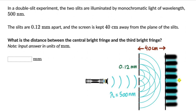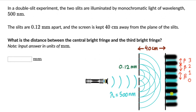The fringe width is the distance from one bright fringe to the adjacent bright fringe, denoted by beta. This is the distance between the central bright fringe and the first bright fringe. The second bright fringe is also one beta away, and the third bright fringe is another beta further. The intensity of the bright fringes decreases as you go further from the center.